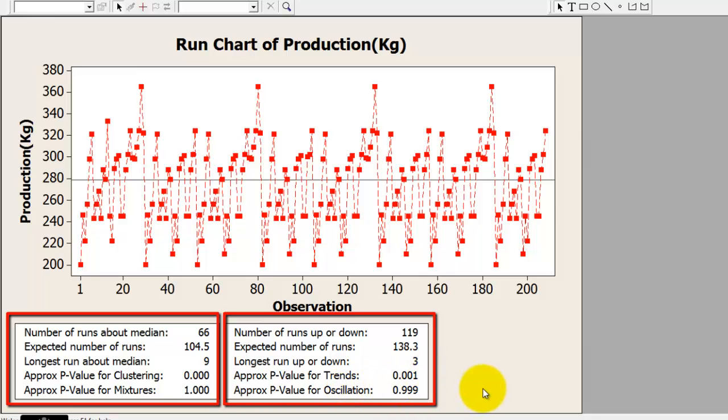Remember, for data to be random or stable, all p-values must be greater than 0.05.